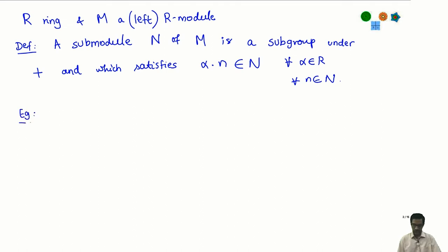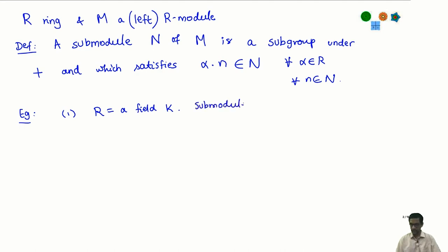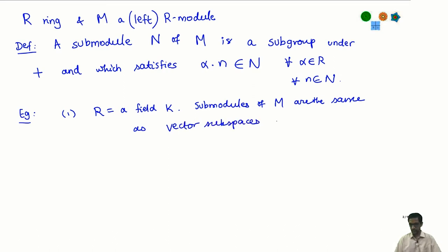In the obvious examples, if R is a field K, recall that R-modules are just the same as vector spaces over the field K. It comes as no surprise that sub-modules are just the same as sub-spaces — sub-modules of M are the same as vector sub-spaces.